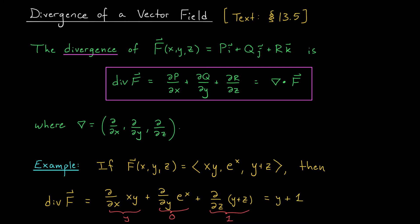Notice that the divergence is a scalar field — it's a function that takes in x, y, z but spits out just a single real number. The curl, on the other hand, was a vector field. So this is the big difference between curl and divergence: curl is computed with a cross product and is a vector field, while divergence is computed with a dot product and is a scalar field.